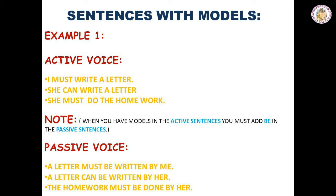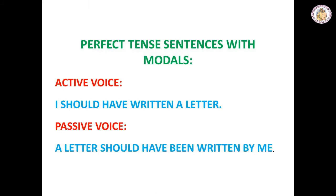Let us take a look at sentences with modals. I must write a letter — passive: a letter must be written by me. She can write a letter — passive: a letter can be written by her. She must do the homework — passive: the homework must be done by her. For perfect tense sentences with modals: I should have written a letter — passive: a letter should have been written by me.